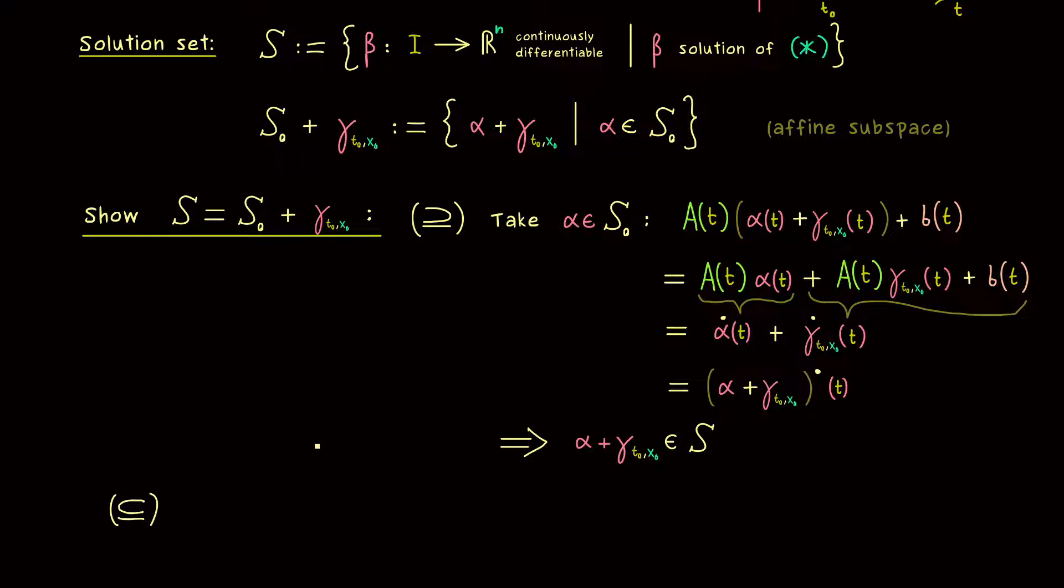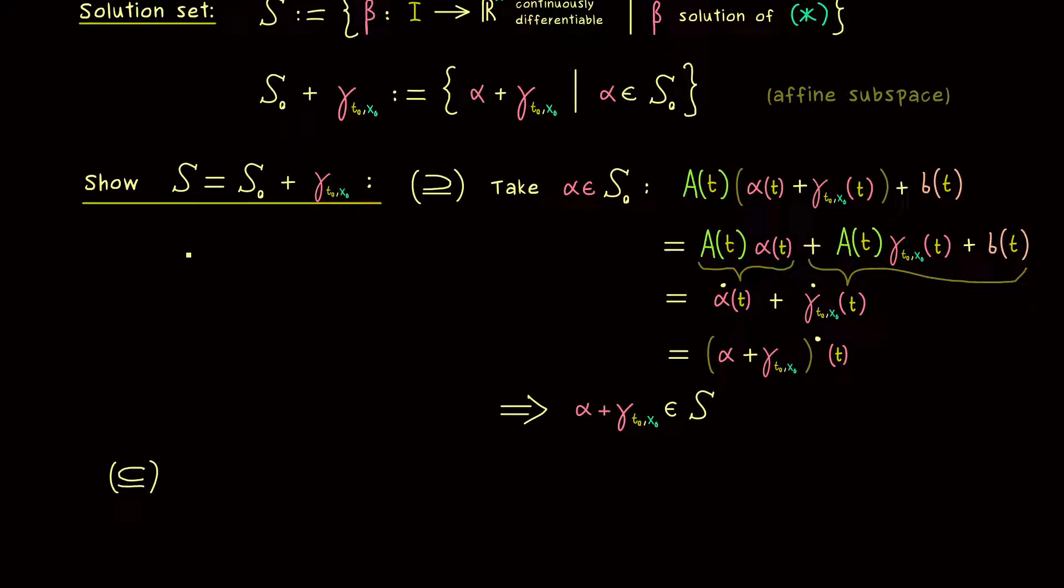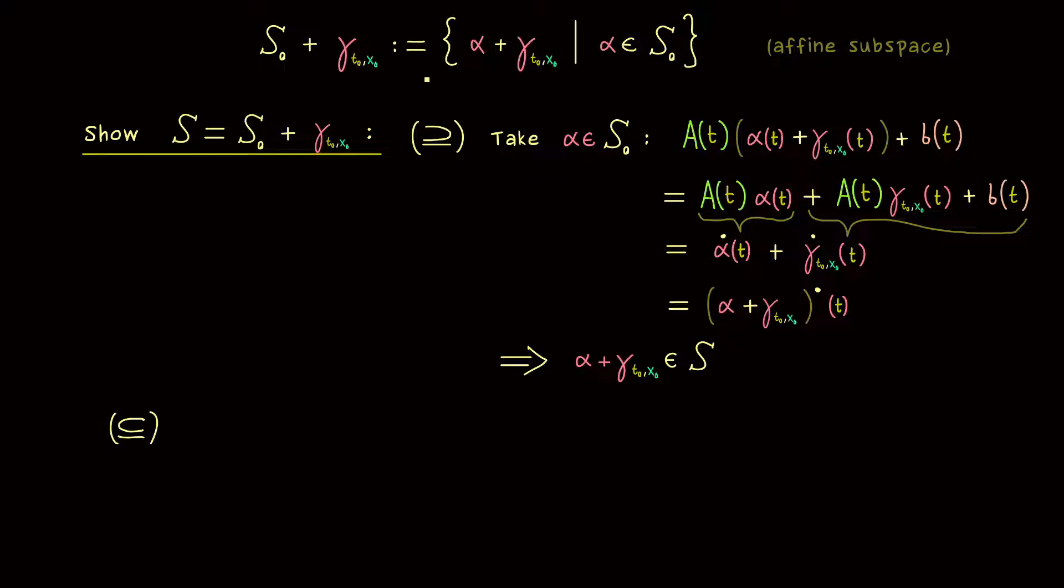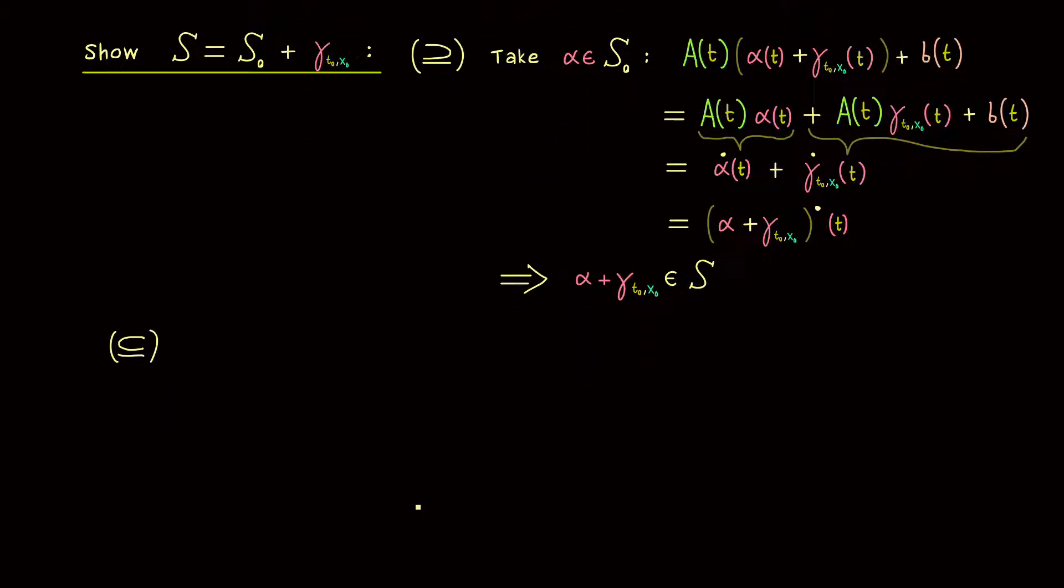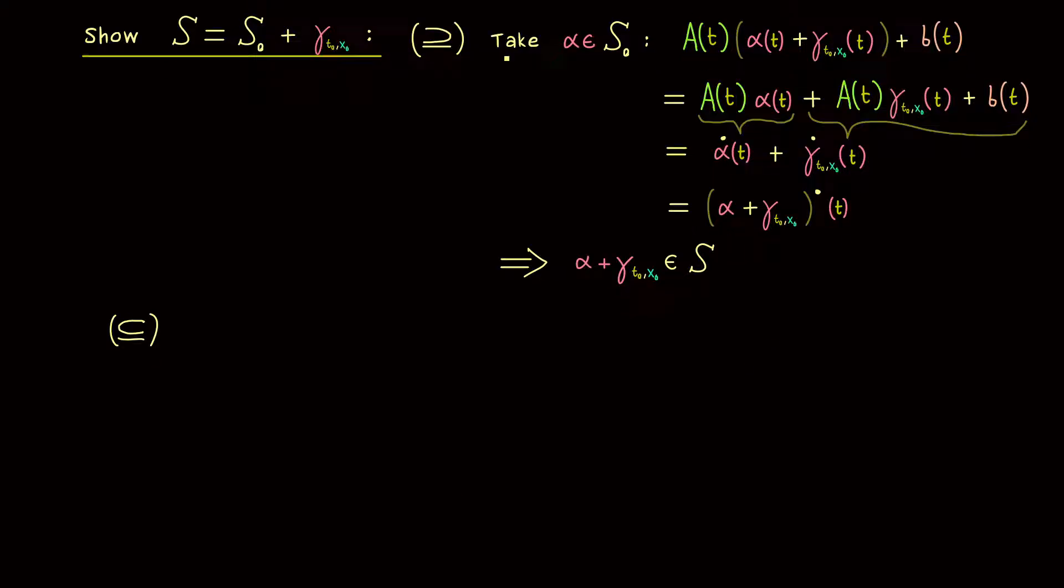So what remains to show is the second inclusion. For this we have to take an element of S and to show that it has the form alpha plus gamma. In fact this seems a little bit harder than just calculating as before. But let's see what we can do with our knowledge here. So let's take a solution beta from S and let's recall the picture from before. So there we have sketched our special solution gamma.